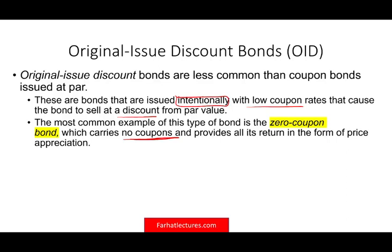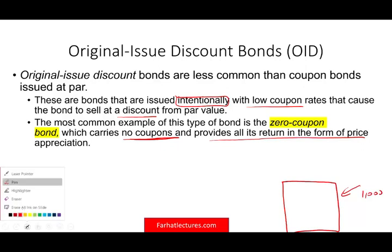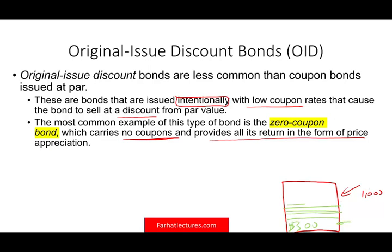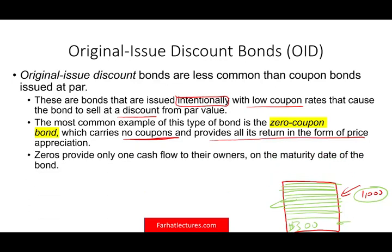Why would I buy a zero coupon bond if I'm not going to receive any payment? Here's what happens: it provides all the return in the form of price appreciation. Let's assume you purchased a $1,000 zero coupon bond. You buy the bond for, say, $300, but the face value of the bond is $1,000. As time goes by — let's assume it's a 10 or 15-year bond — you keep accumulating interest until you get the $1,000 face value. You would wait 15 years, don't get anything along the way, but you will get the $1,000 all at once.